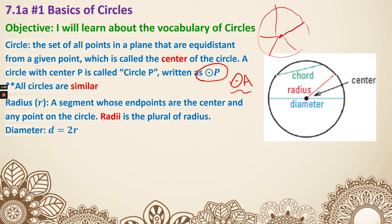Next, radius. Radius is the segment whose endpoints are the center and any point on the circle. So the center is right here, any point on the circle - that's a radius, that's a radius, that's a radius. As you can see, a circle has infinitely many radii. Radii is actually the plural form of radius.